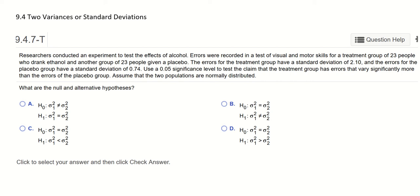And another group of 23 people given a placebo. The errors for the treatment group have a standard deviation of 2.10 and the errors for the placebo group have a standard deviation of 0.74. Use a 0.05 significance level to test the claim that the treatment group has errors that vary significantly more than the errors of the placebo group. Assume that the two populations are normally distributed.